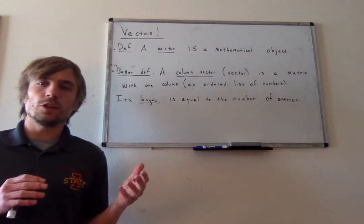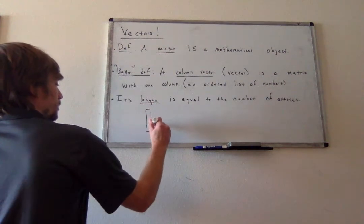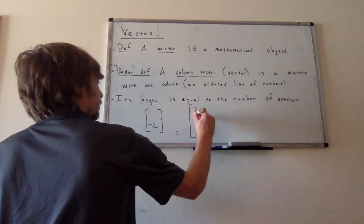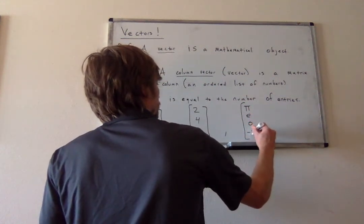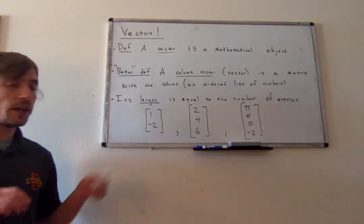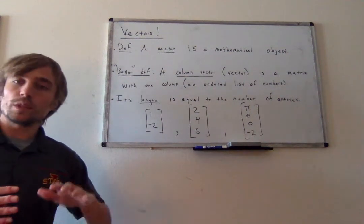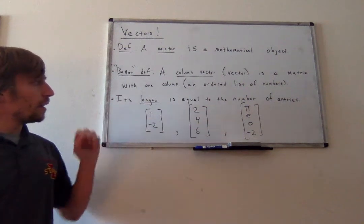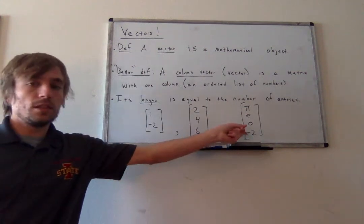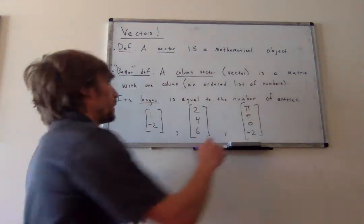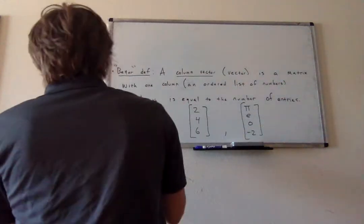We can think of a vector as an ordered list of numbers. Each of these can be thought of as matrices with just one column, or if you just want to think of them as lists of numbers, that's fine too. For any vector, the length of that vector is just the number of entries it has. So a vector with 2 entries is a vector of length 2, one with 3 entries is length 3, and one with 4 entries is length 4.